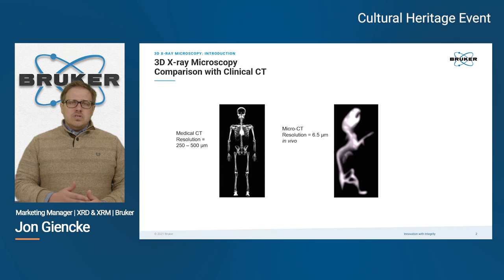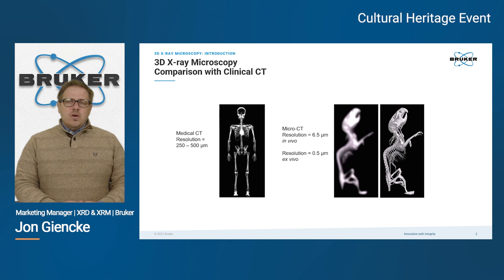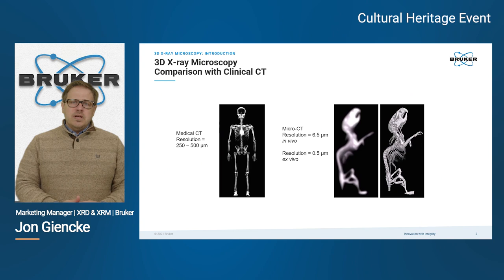even reducing that resolution to around six and a half microns in a micro CT experiment is insufficient. Certainly that 250 to 500 microns would give us almost no usable information. But by further reducing that resolution to the submicron zone, we are able to clearly see details of the specimen, in this case a small animal.